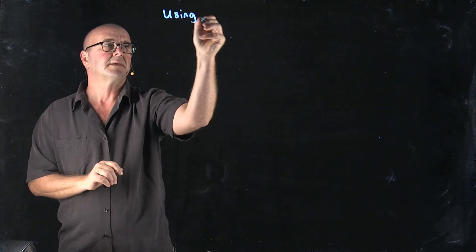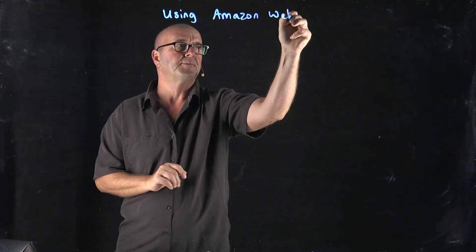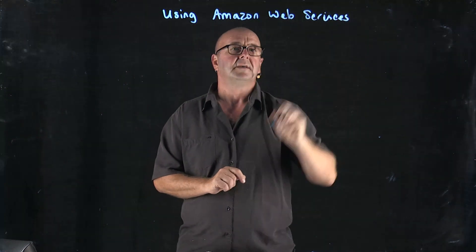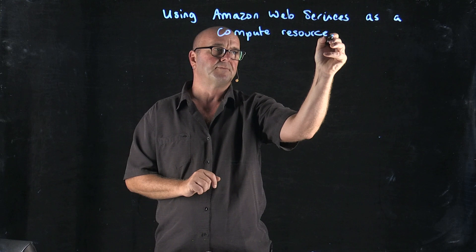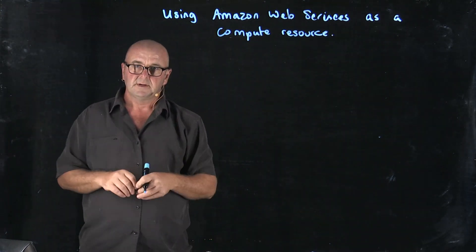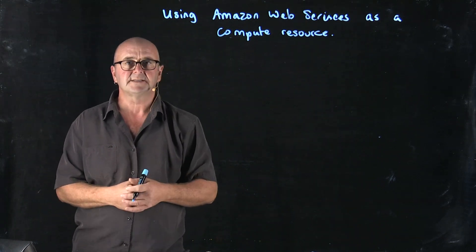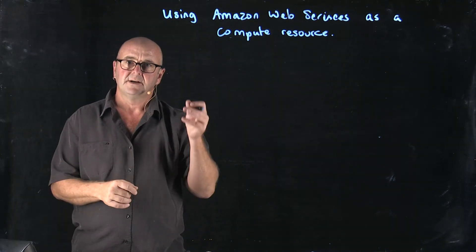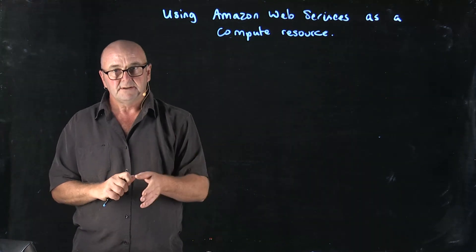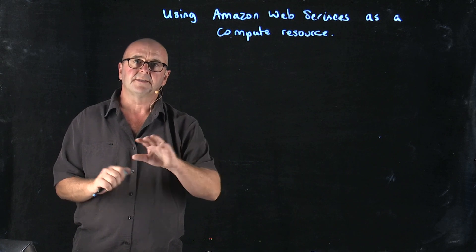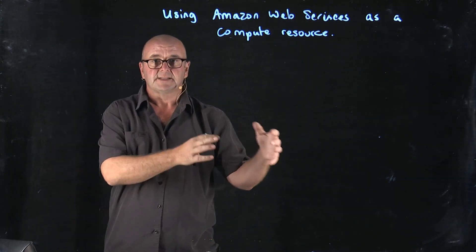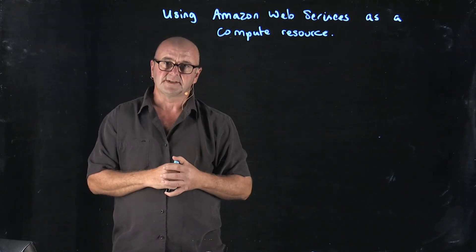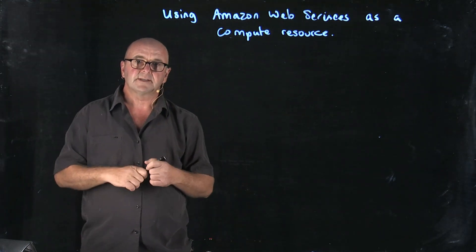One of the key concepts we're going to work on during the class is using Amazon Web Services as a compute resource. By the end of the class, I hope you'll feel comfortable starting up Amazon instances, accessing them using SSH, running algorithms, running programs, analyzing data on those Amazon instances, retrieving your data, and then finally shutting them down. We're going to start with this right away, as we'll be using Amazon Web Services all of the time to do our computation.